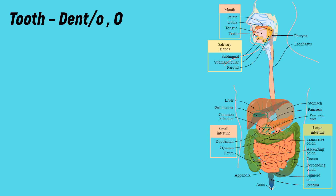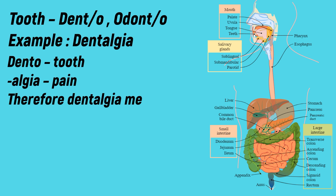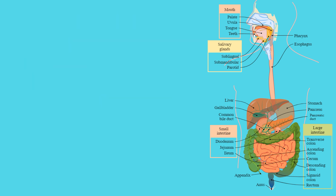Tooth: the medical term is 'dento' or 'odonto'. Example: dentalgia. -Algia indicates pain, and dento indicates tooth. Therefore, dentalgia means pain in the tooth.